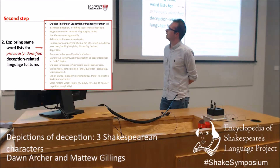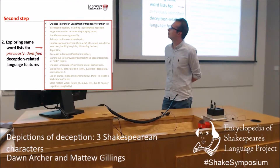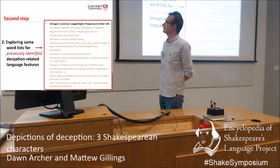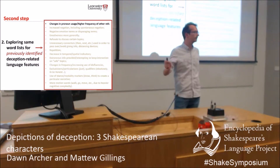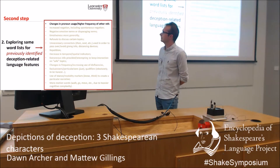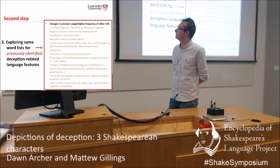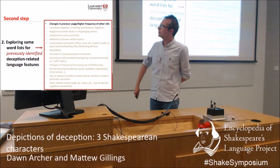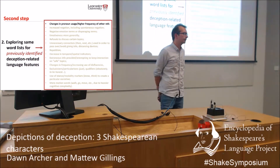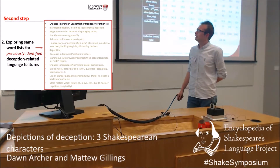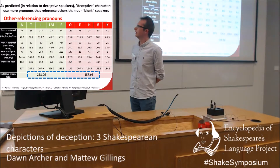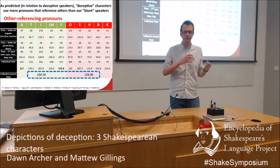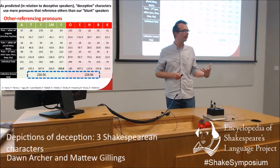You can have a read through the indicators. These include an increase in negation, emotiveness — but in particular negative emotion, which we saw coming through in the keyword lists — unnecessary connectors, and a decrease in temporal and spatial indicators, which might indicate a decrease in context and contextual information. This is essentially a list of indicators that we might be looking for which suggest deception is taking place.